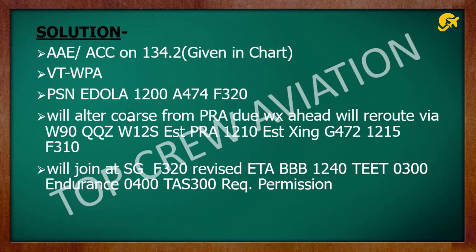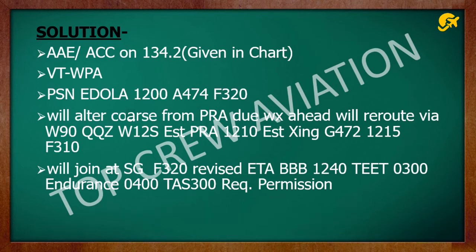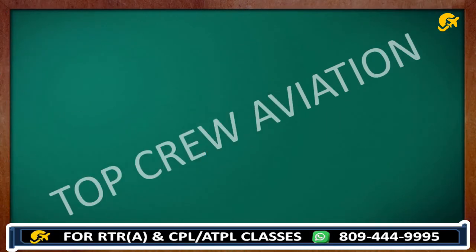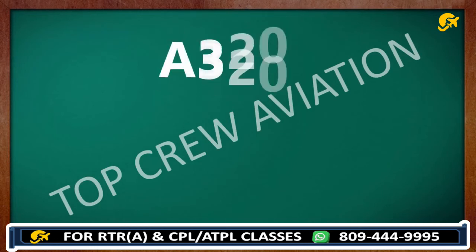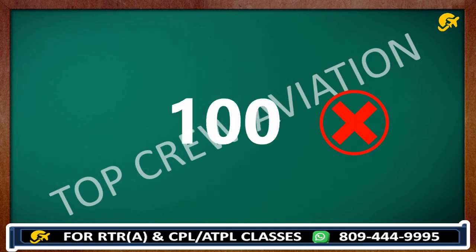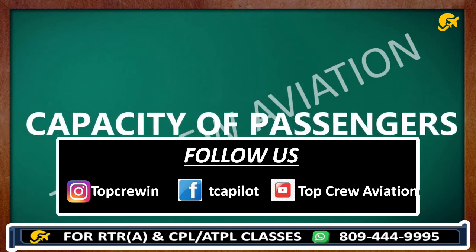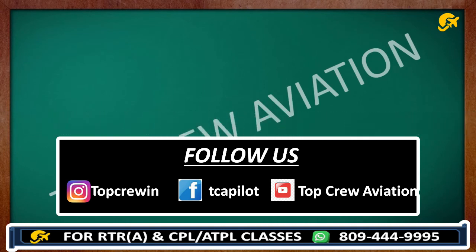Keep in mind: if it is a Cessna, never mention TAS 300 knots. If it is Boeing or Airbus, it's okay. Most of the time they do not mention the type of aircraft. You should be approximately correct on speed — if it is a 320, saying 280 or 300 is okay, but saying 100 is definitely not okay. Have basic knowledge about the aircraft — its passenger capacity and basic speeds. Pilots know all these things easily, and AME guys should also be aware.